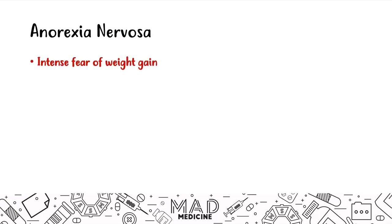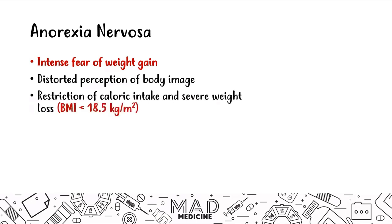In anorexia, you're going to have an intense fear of gaining weight. These patients have a disordered perception of their body image. They restrict their caloric intake because of that disordered perception, and this leads to severe weight loss. The hallmark for anorexia is a BMI that is less than 18.5 — this is high-yield, because on the USMLE Step 1 they may present a vignette very similar to bulimia, except for the BMI. If the BMI is less than 18.5, you are dealing with anorexia. If the BMI is even 18.6 or 18.7, it is a bulimic patient. Never forget: 18.5 is the cutoff.